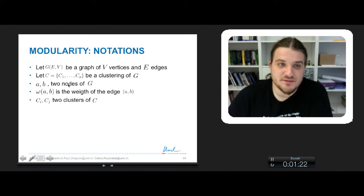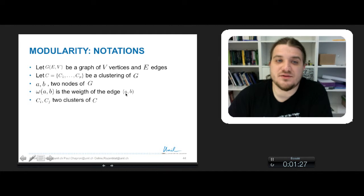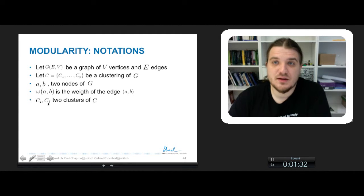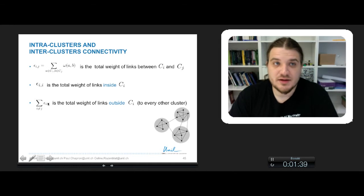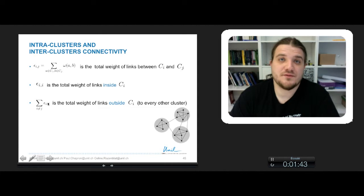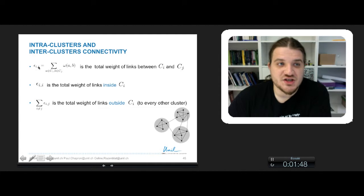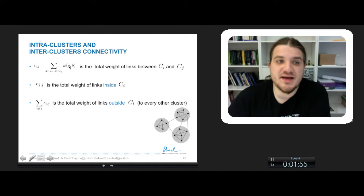A and B are two nodes of G. W(A, B) is the weight of the edge between nodes A and B. And C_i and C_j are two clusters of C. C is the clustering of G. So modularity is about intra-cluster and inter-cluster connectivity. Let's introduce the notation of cluster connectivity. The notation Epsilon(i, j) stands for the sum of W(A, B), the weight between nodes A and B.